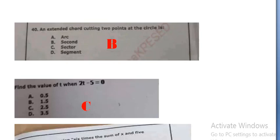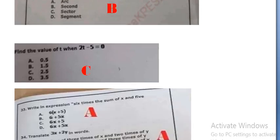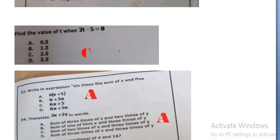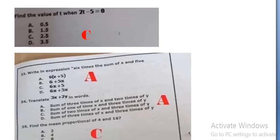Find the value of t when 2t minus 5 is equal to 0: 2.5, option C. Write the expression 6 times the sum of x and 5: 6 into x plus 5, option A. Translate 3x plus 2y in words.